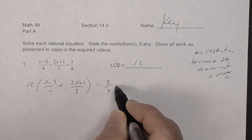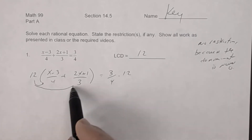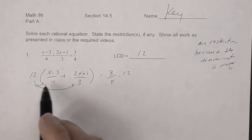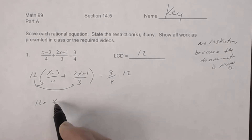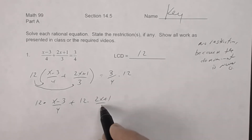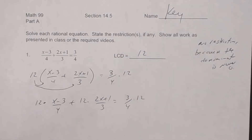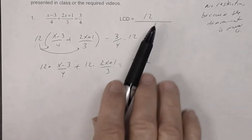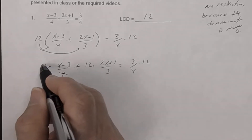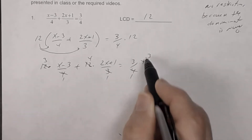Multiply both sides by 12 and distribute: you get 12 times (x minus 3) divided by 4, plus 12 times (2x plus 1) divided by 3, equal (3/4) times 12. Now reduce: 4 into 12 is 3, 3 into 12 is 4, and 4 into 12 is 3 — the denominators become one.